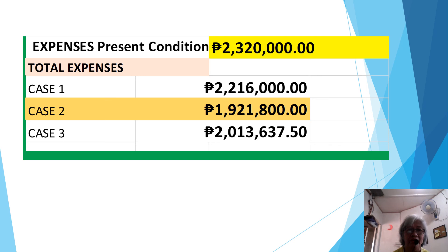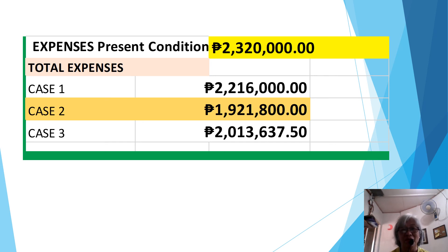Here is a summary of what we have computed. Present condition: $2,320,000. Case 1: $2,216,000. Case 2: $1,921,800. Case 3: $2,013,637.50. The best engineering economic decision is Case 2, as it gives the highest savings.